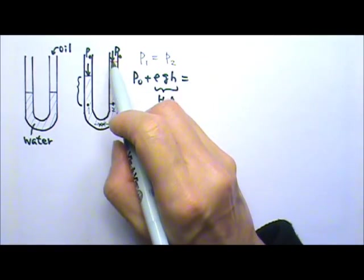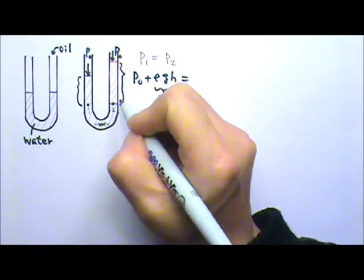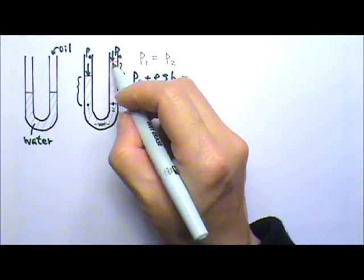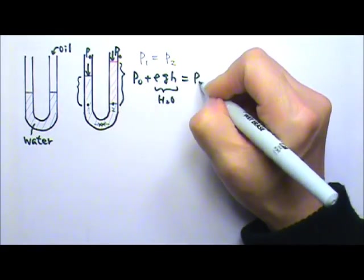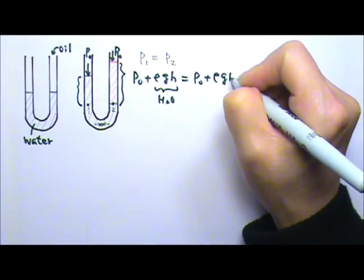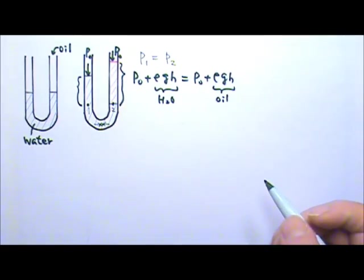P2 would equal to P0 plus the ρgh produced by this oil column. But this is the oil column's ρgh.